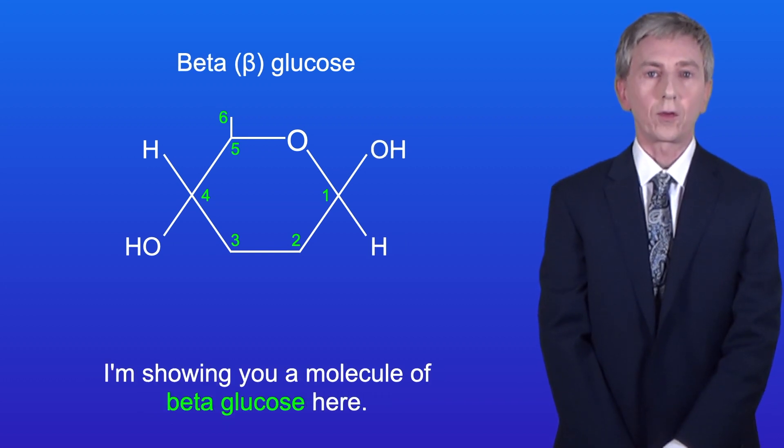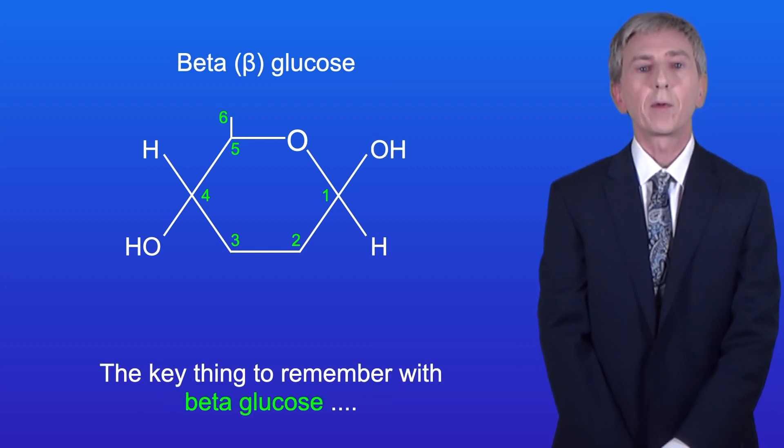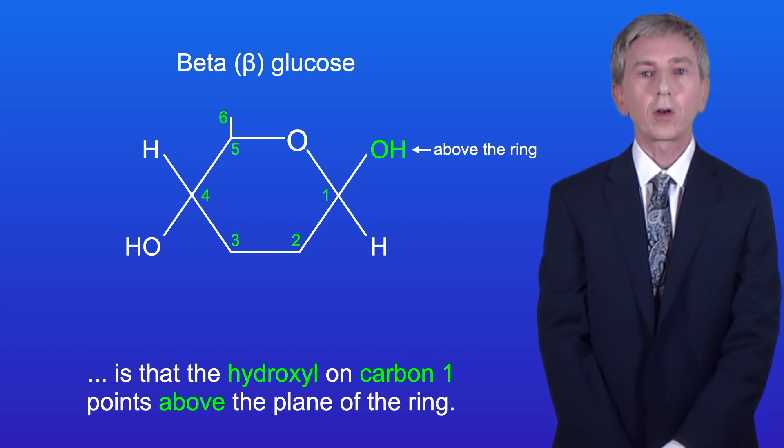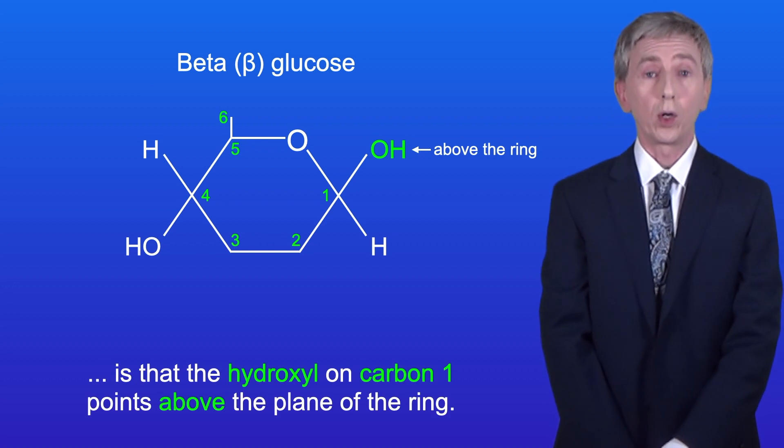I'm showing you a molecule of beta glucose here. The key thing to remember with beta glucose is that the hydroxyl on carbon one points above the plane of the ring.